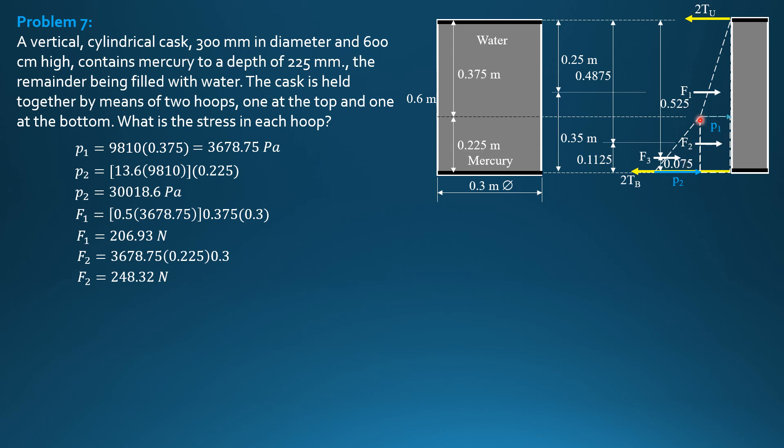F3 is equal to the triangular pressure diagram, 0.5 or one-half. P2, which is 30,018.6, height 0.225, perpendicular to the board, 0.3. So F3 is equal to 1,013.13 newtons.